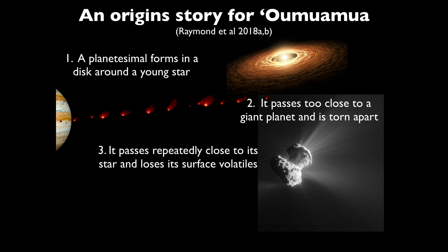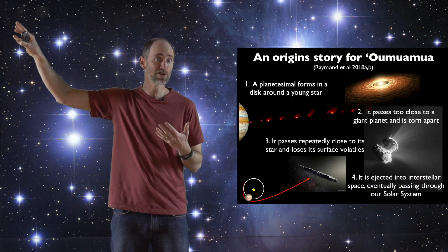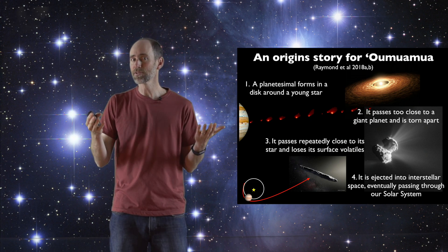Those pieces passed close to their star several times before being ejected, enough times to lose their surface volatiles and become extinct. And then finally they were ejected, Oumuamua was ejected into interstellar space, eventually passing through our solar system where we see it now.